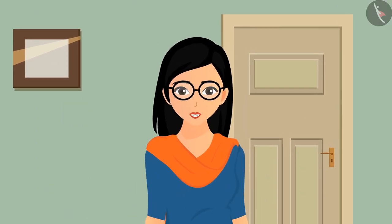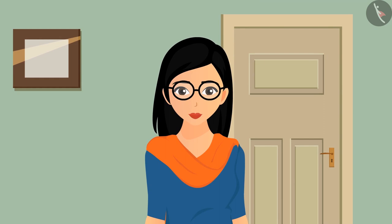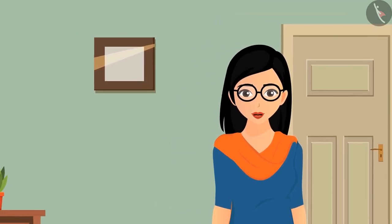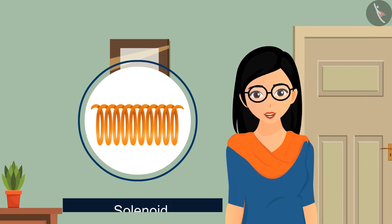You must be thinking what was the reason behind understanding the circular loop. You will get to know the reason by the end of this video. What will happen if you take a number of loops and make a coil out of it in place of a single loop? This coil, in terms of science, is known as solenoid.